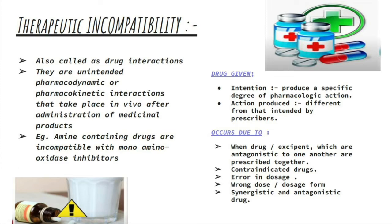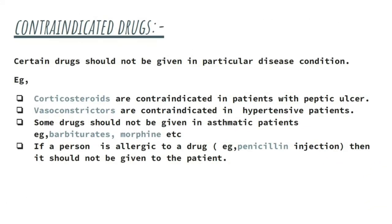Contraindicated drugs: certain drugs should not be given in a particular disease condition. For example, corticosteroids should not be administered in patients with peptic ulcers — they are contraindicated. If a patient with peptic ulcer is prescribed a corticosteroid, that is a therapeutic incompatibility. Similarly, morphine is contraindicated in patients with asthma.